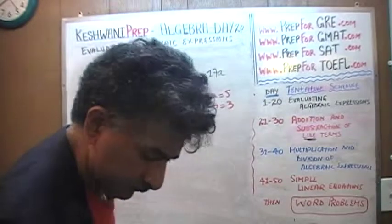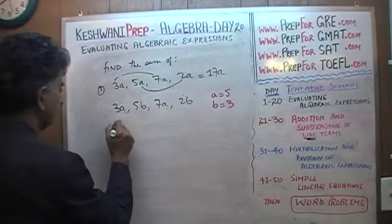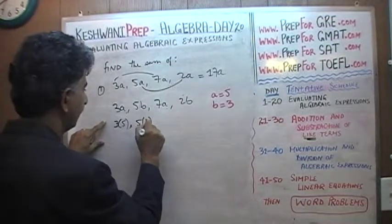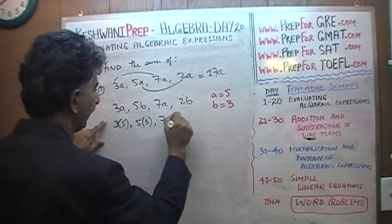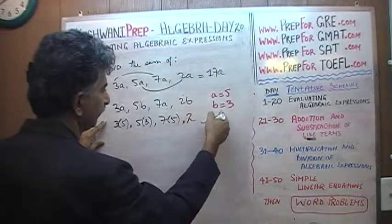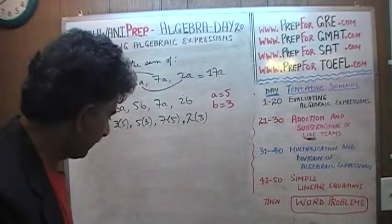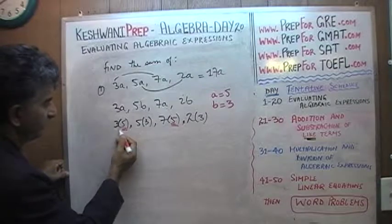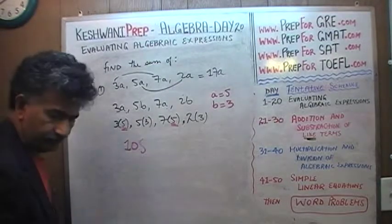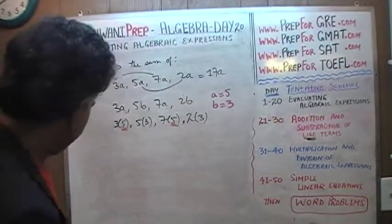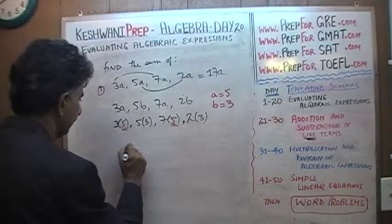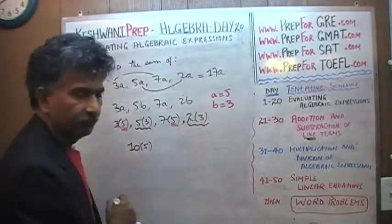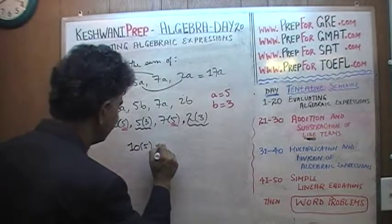Then this is what we are looking at. If we knew that, it would be like this: 3 times a, which is 5, and 5 times b, which is 3, and 7 times a, which is 5, and 2 times b, which is 3. Now what we do in algebra is we combine the like terms. This is 5 and this is 5. So we have 3 fives and 7 fives — 3 fives and 7 fives make 10 fives. Now we look at these: we have 5 threes and 2 threes. 5 threes and 2 threes make 7 threes.